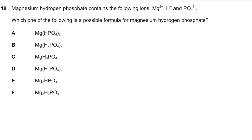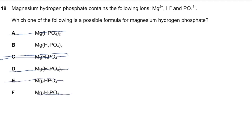Question 18: Magnesium hydrogen phosphate contains Mg²⁺, H⁺, and PO₄³⁻. Which formula for magnesium hydrogen phosphate has a net charge of zero? Option A has charge 2−; C has 2+; D has 2+; E has 2+; F has 3+. Option B gives a net charge of 0. The answer is B.